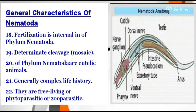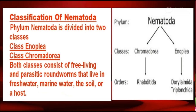They are free-living, or phytoparasitic (plant parasites), or zooparasitic (parasites of animals). Now we will discuss the classification of nematode.